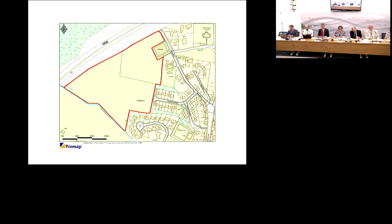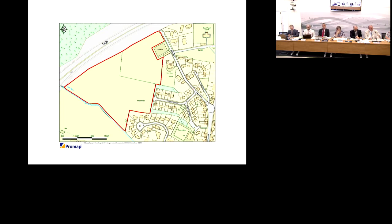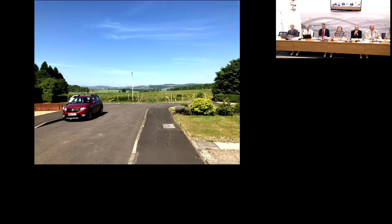Outline planning permission was originally approved by Committee for residential development in March 2008. This consent has subsequently been extended on three separate occasions: 2011, 2013, and 2015. With this application, the applicant is again seeking to amend the terms of Condition 1 to extend the permission for a further three years. The first photograph is taken from Manse Road looking southwest across the upper area of the site, with the M90 immediately to the right.